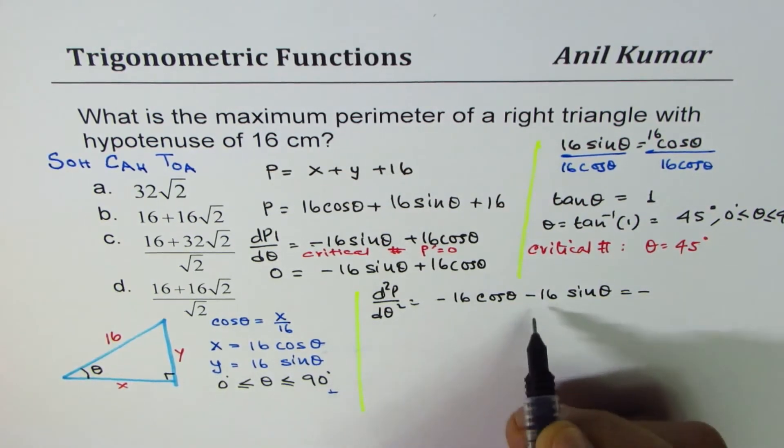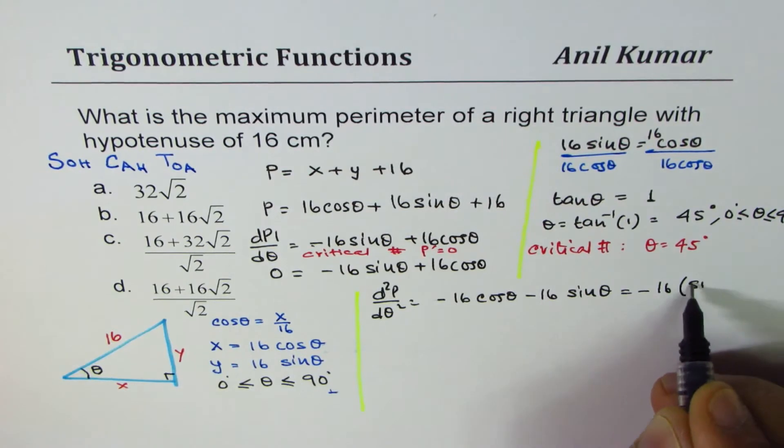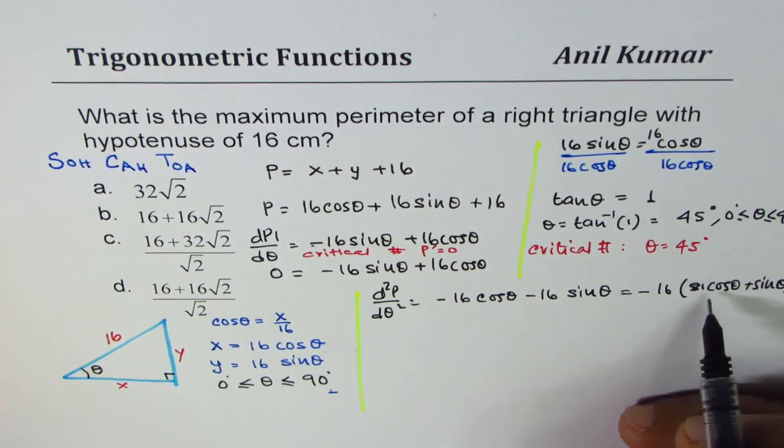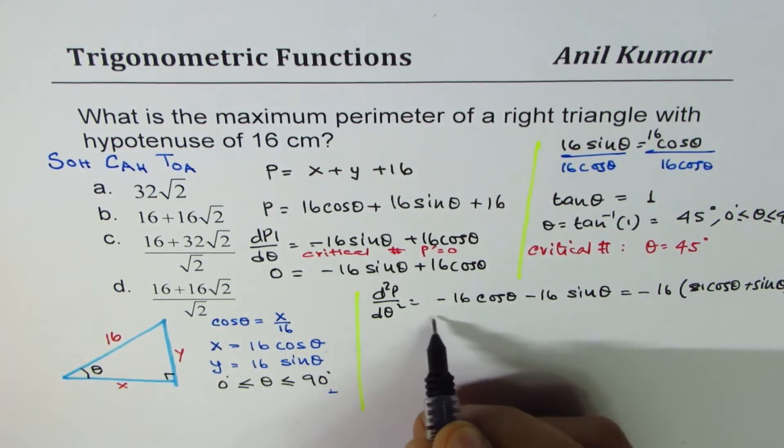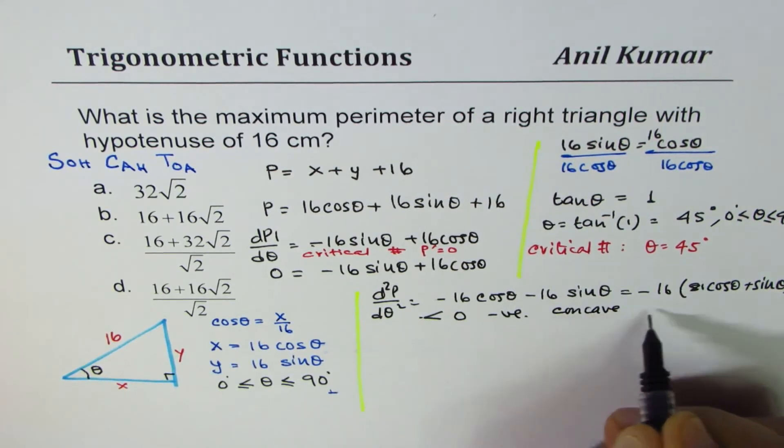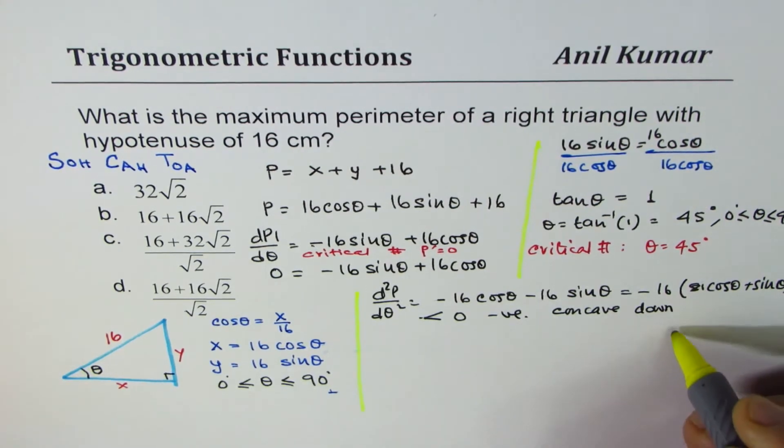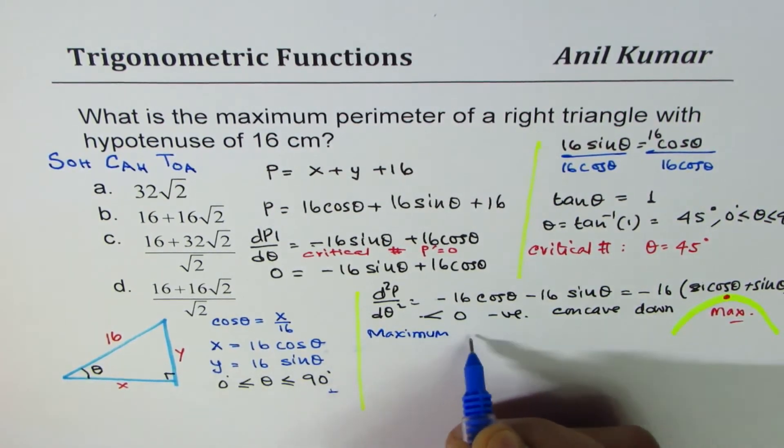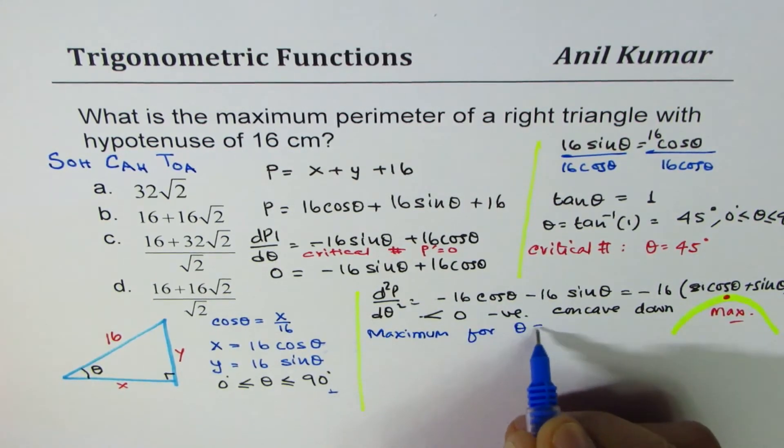We get minus 16 cos theta minus 16 sin theta. If I take minus 16 common, we get minus 16 times (cos theta plus sin theta). For angle between 0 to 90, both of them are positive, so we get a negative result. The second derivative is negative, which means concave down. That means you have a maximum, so we have a maximum for theta equals 45 degrees.